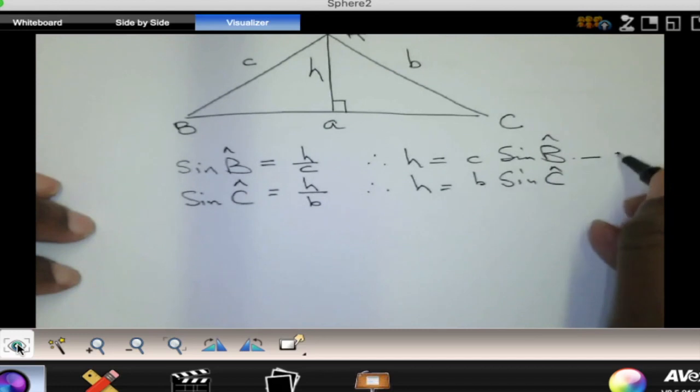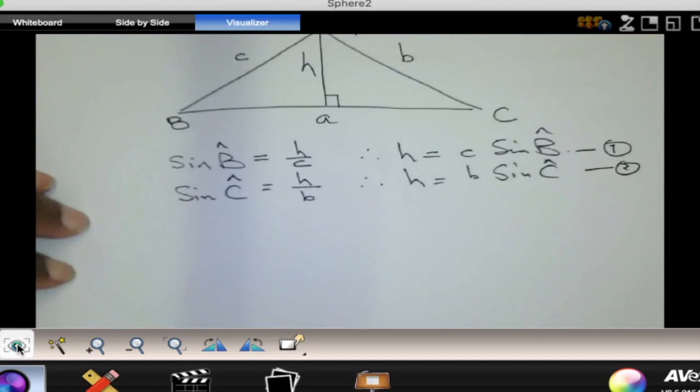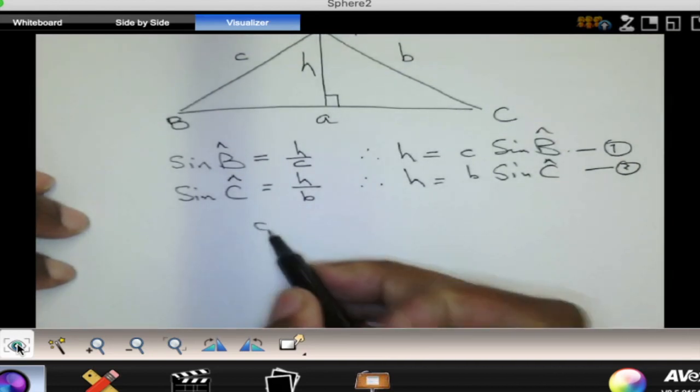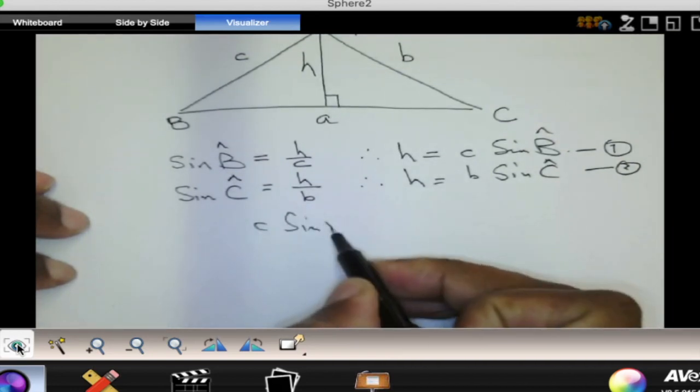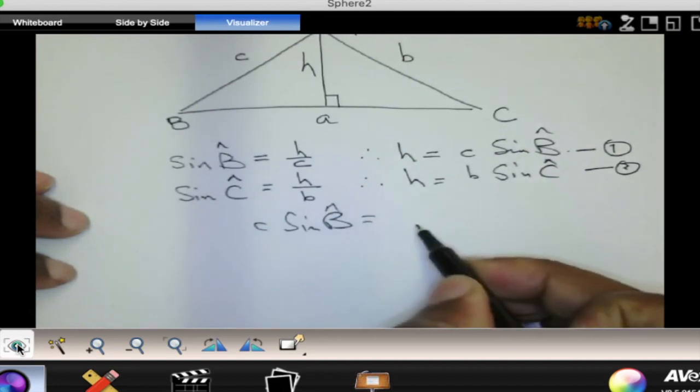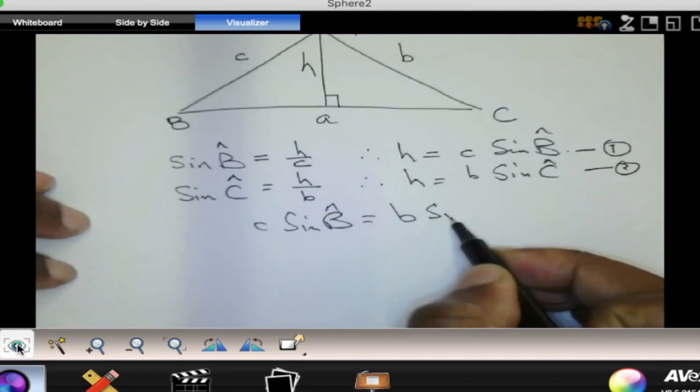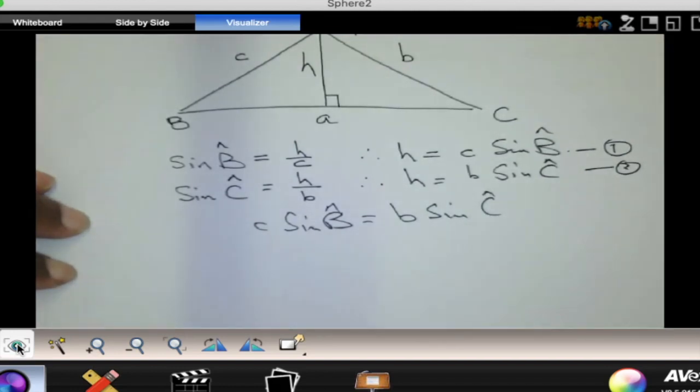Now we can use these two equations to solve simultaneously. It says h is equal to c sine B, but h again is equal to b sine C. That then means that c sine of angle B should be the same as b multiplied by sine of angle C. I hope you see that from number one and number two.